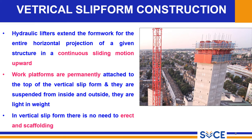The vertical slip form system surrounds the concrete form with a platform that allows workers to work safely while standing. The hydraulic jack raises the concrete form and the working platform. Several types of hydraulic jacks are available to lift the form. In the vertical slip form, there is no need to erect any scaffolding. It has a work platform which is permanently attached at the top of the vertical slip form and they are suspended from the inside and outside, divided in weight.